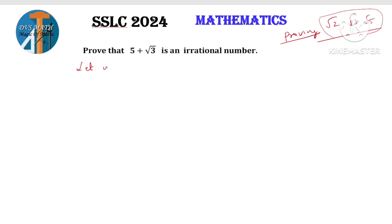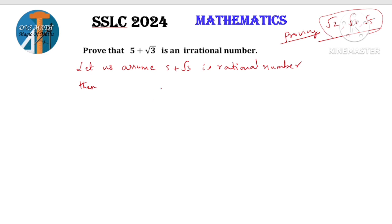Let us assume 5 plus root 3 is a rational number. We want to show this leads to a contradiction and prove it is irrational. Let us assume 5 plus root 3 is a rational number. You know the rational number definition: we can express the number in the form a by b, where a and b are integers and b is not equal to 0. So, if it is rational, then 5 plus root 3 is equal to a by b.